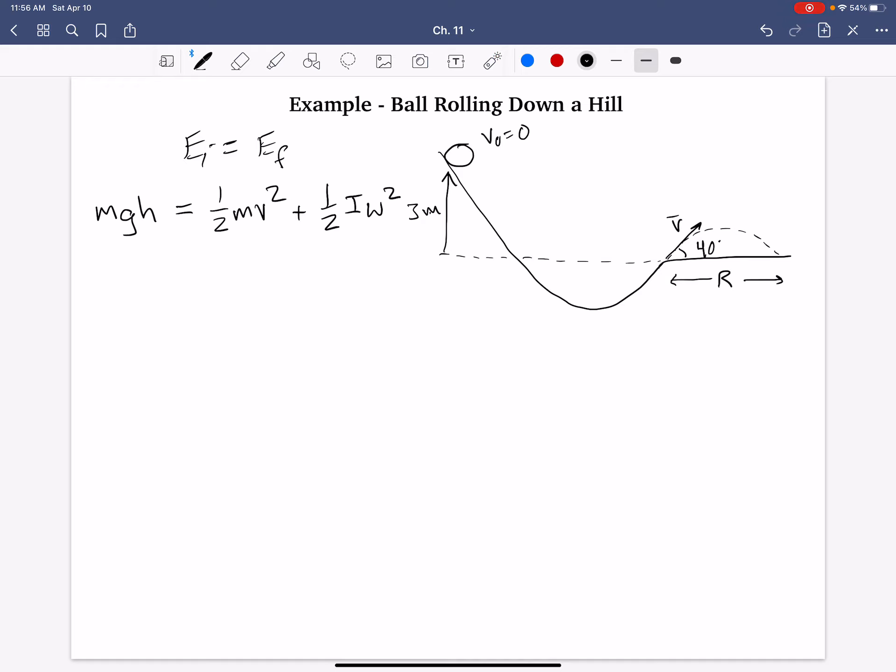Now, that speed v right here, this speed is actually right there, but it's also embedded in omega. Because as that ball rolls, it'll have some angular speed rotating about an axis kind of right there, horizontally, into and out of the screen. So, it'll have some omega,